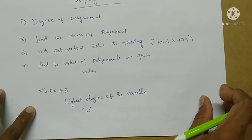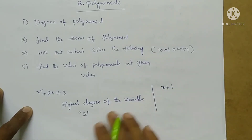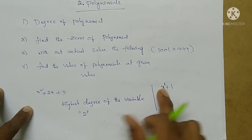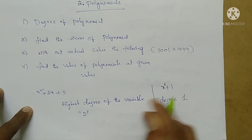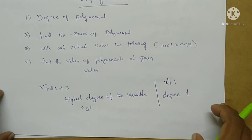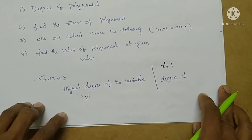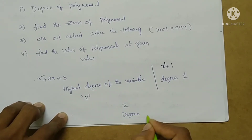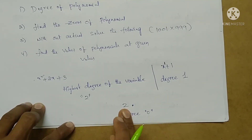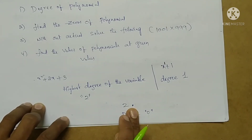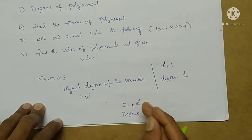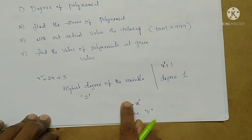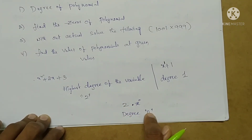Take another example: x plus 1. The highest power of x is 1, so the degree is 1. For a constant polynomial, the degree is 0 because it is multiplied by the variable of degree 0 — that is x power 0, or any variable to the power 0. So the constant polynomial degree is always 0.